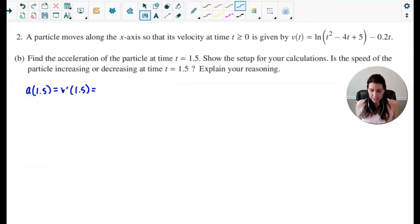So what I did is I was unsure, so I thought to myself, you know what, let me go ahead and find the derivative of velocity or acceleration by hand. And the derivative of a natural log is 1 over (t² - 4t + 5). And then we have to multiply by the chain rule, multiply by the derivative of the inside (2t - 4), and then subtract 0.2.